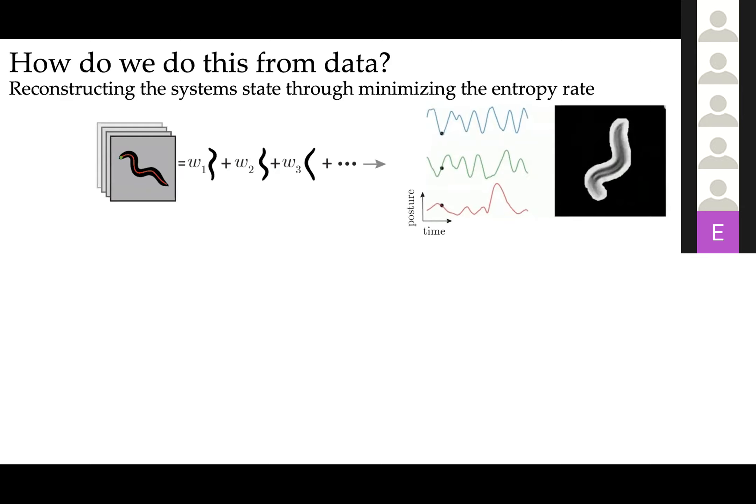Now one of the main principles behind the framework that I've just described as a transfer operator is that the dynamics is first order. So we need to have the full state—the full dynamical state of the system—in order to be able to build the operator in the first place. Nothing guarantees that these measurements that we're taking from the worm obey first-order dynamics. In fact, higher-order dynamics are extremely common in physics.